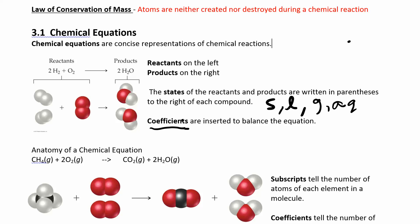Coefficients are really important when you're balancing. Those are the numbers you add in front of the molecules. You can see that two and that two — those are your coefficients. They tell you how many of each molecule you have. This two right here means I have two hydrogen molecules. If there's nothing written in front, that means you only have one. In CH₄, I have one carbon and four hydrogens. Here I have two oxygens, and that coefficient means I have two oxygen molecules — but the subscript two inside means I have two oxygen atoms per molecule.